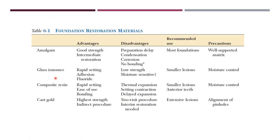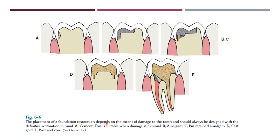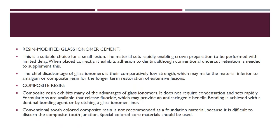The list of foundation restoration materials includes amalgam, glass ionomer, composite resin, and cast gold. Mostly composite and GIC will be used. The placement of the foundation restoration depends on the extent of the damage. For very minimal damage, just a cement; for bigger damage, amalgam; for more extensive, a pin-retained amalgam; for larger defects, a cast gold; and for endodontically treated teeth, a post and core.